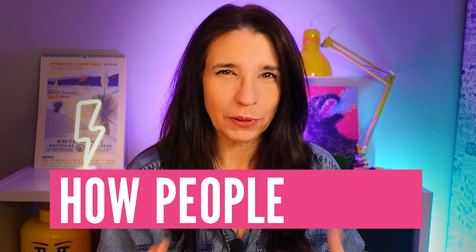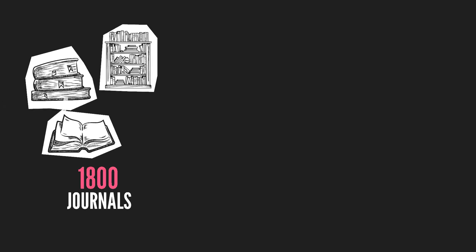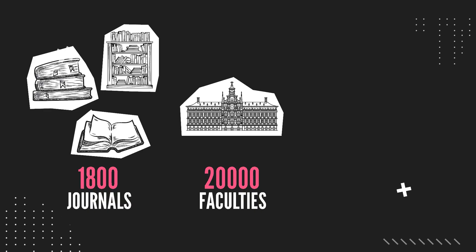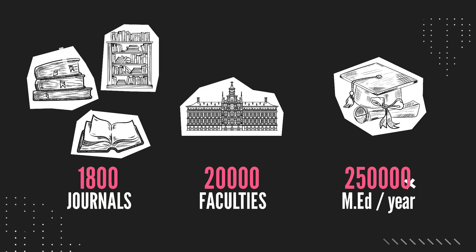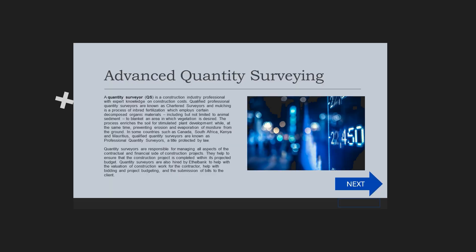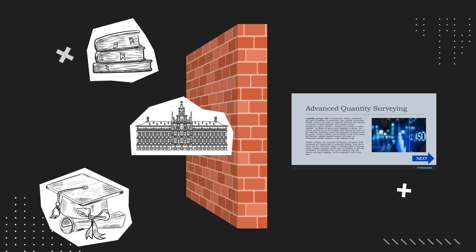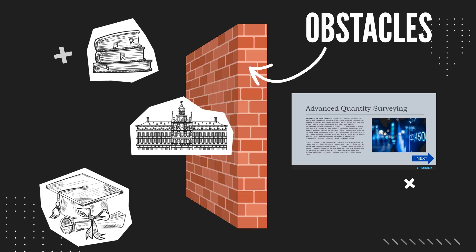There is a lot of research into how people learn. Thousands of journals and institutions are dedicated to studying it, and every year a quarter million new grads get masters in education. We know how people learn. So how do we end up with this? Turns out that when we try to apply that precious knowledge to e-learning, we run into some very real obstacles.